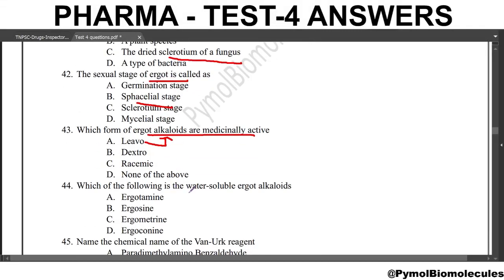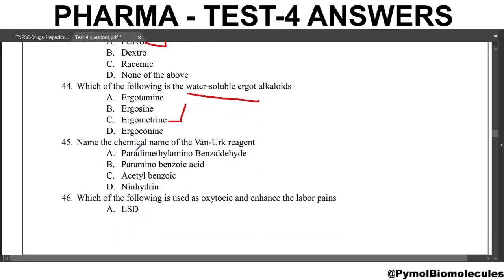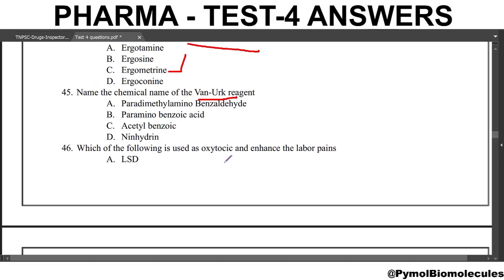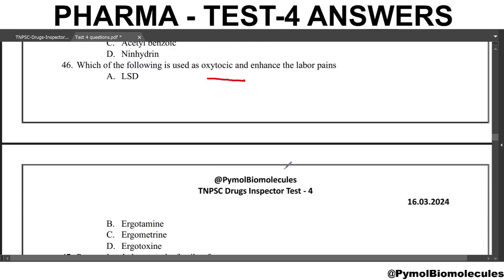Which one of the following is a water-soluble ergot alkaloid? This is a very important question as it may appear in other exams. The answer is ergometrine. Name the chemical name for the Van Urk test. The answer is para-dimethylaminobenzaldehyde. Which one is used as an oxytocic to enhance labour pains? The answer is ergometrine.